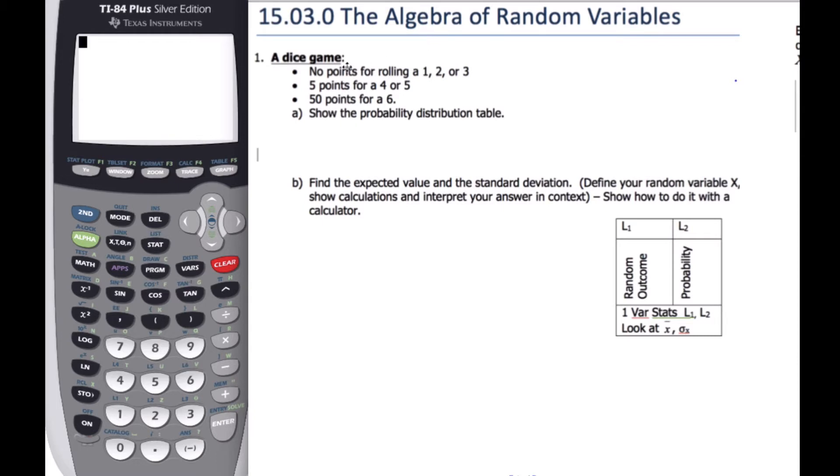So first of all, I'm going to consider this dice game. You get zero points for rolling a one, two or three, five for a four or five, or 50 points for a six.